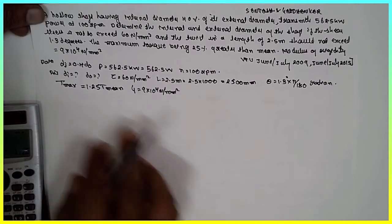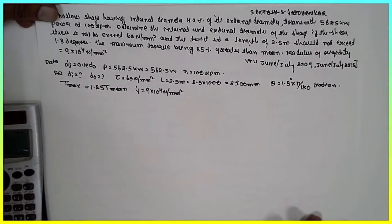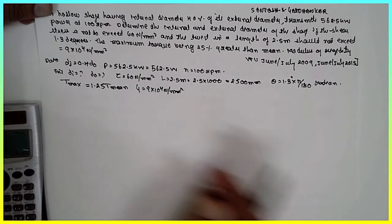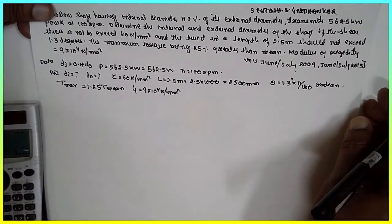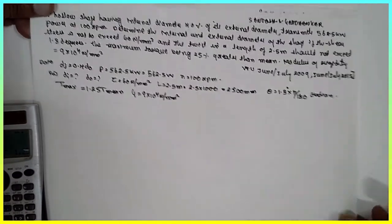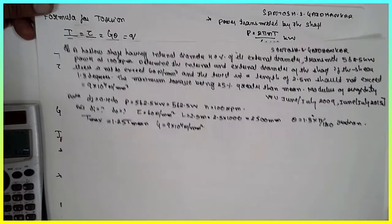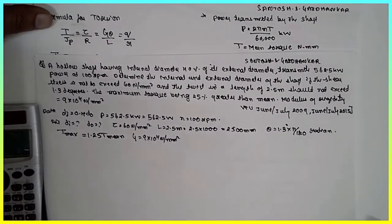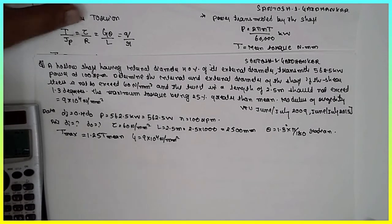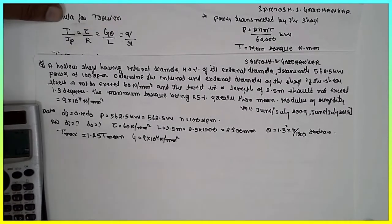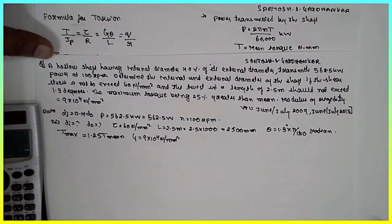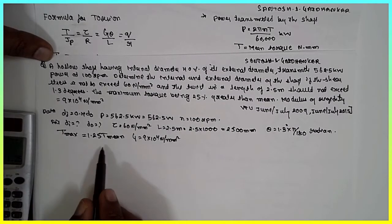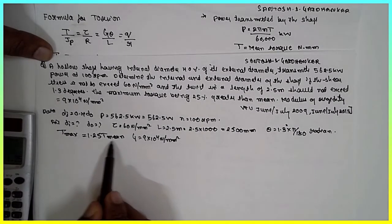We need to find internal and external diameters. Therefore, we go for a combination of shear stress and angle of twist with respect to torque.